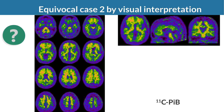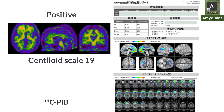In another equivocal case using carbon-11 PIB PET, the right frontal cortex seems to show somewhat increased accumulation. The centiloid scale is 19. The frontal cortex and posterior cingulate gyrus show significantly increased accumulation on the Z-score map, also suggesting amyloid positivity. To become proficient in evaluating amyloid PET, combined use of visual reading and quantitative assessments using centiloid scale and Z-score mapping is useful.